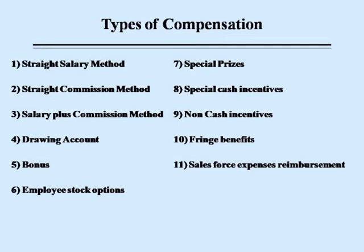Next are special prizes, where the organization rewards sales personnel with special prizes either in the form of money or valuable gifts like a flat screen TV, a Rolex watch, or an expensive dinner set. Next are special cash incentives, which are given to sales personnel during certain periods of time for performing specific activities or achieving extraordinary results. Such cash rewards are usually not a part of the regular compensation package for sales personnel.